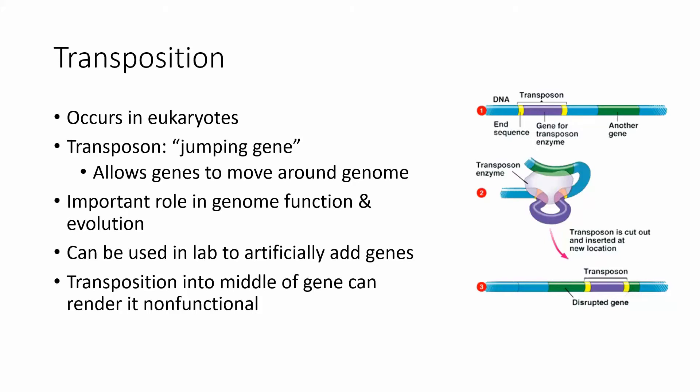Transposition involves jumping genes — transposons are elements that jump from one segment of DNA to another and move around the genome. You can use them in a lab to add segments of DNA to a chromosome, and for a while that was a commonly used technique to insert genes into eukaryotic organisms. There are some really cool new techniques nowadays — if you have a chance, look up CRISPR. CRISPR is a fairly easy-to-use method of modifying DNA and inserting genes into other organisms. Our next lesson will be on genetics.